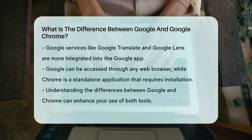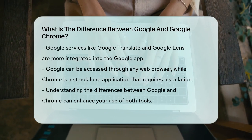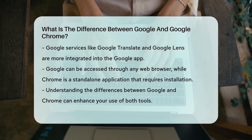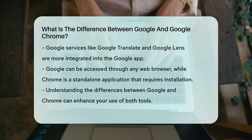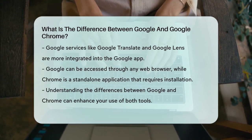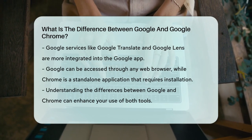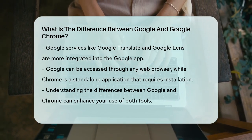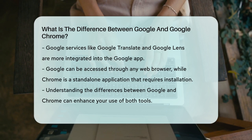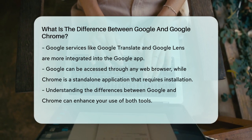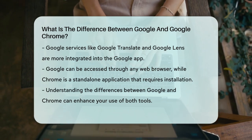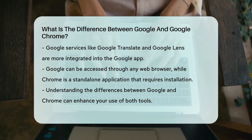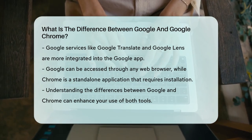Another difference is how you access them. Google is accessible via any web browser, while Chrome is a standalone application that you need to install on your device. So, in short, Google is about searching for information and using various Google services, while Google Chrome is about browsing the Internet and interacting with web pages in a more personalized way.